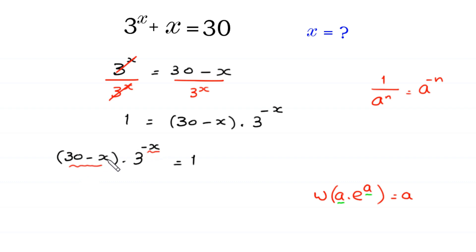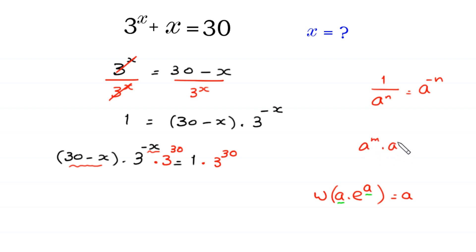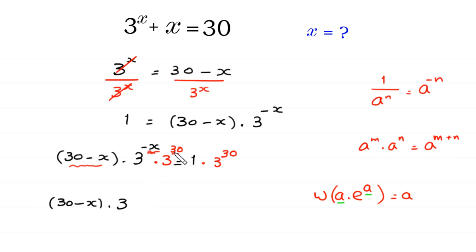So to make negative x the same as 30 minus x, we multiply both sides of this equation by 3 to the power 30. According to the property of exponents, a to the power m times a to the power n is equal to a to the power m plus n, we add these powers. This expression becomes 30 minus x times 3 to the power negative x plus 30.